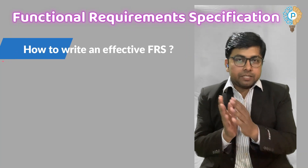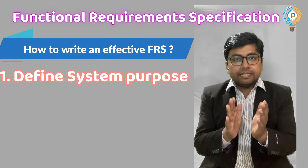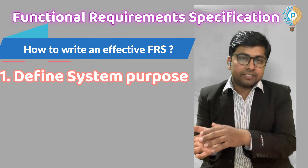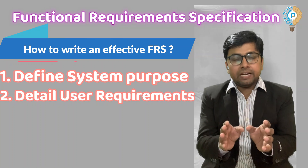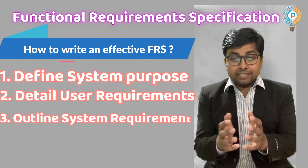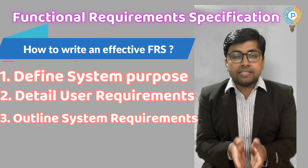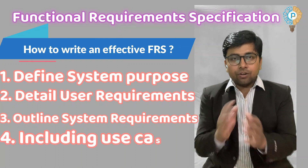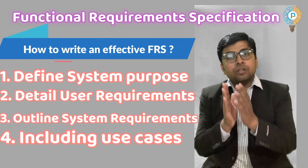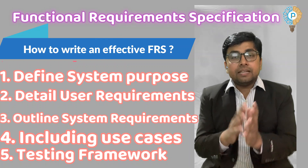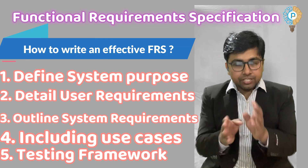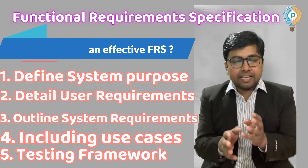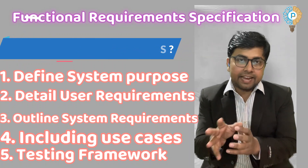To write an effective functional requirement specification document, you have to consider the following. First, define the system purpose — clearly articulate the system's intended functionalities. Second, detail user requirements — it helps build how users will interact with the system. Third, it also outlines the system requirements, how it will work, and what the system needs to achieve the user requirement. Fourth, include use cases — illustrate how your system can achieve the user requirement. Finally, the testing framework — define roles, how you will challenge the system, and what the expected outcome is.